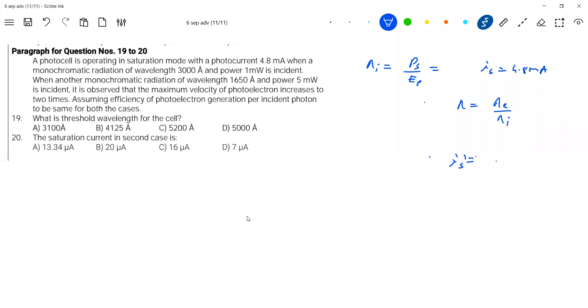Number of photons incident in the second case, we will go like this. N_i dash equals power of source P_s dash divided by E_p dash. Then it's asking the saturation current.